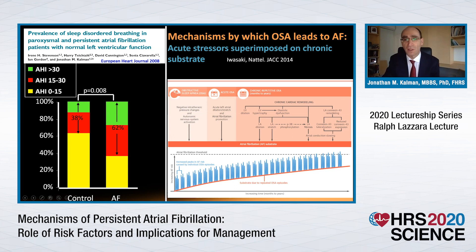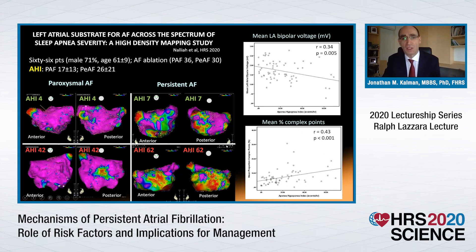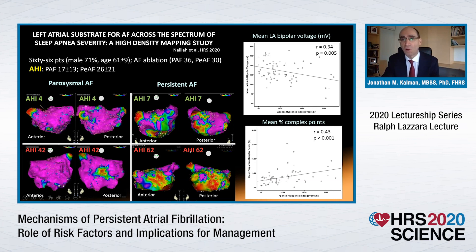There are multiple potential mechanisms by which sleep apnea leads to atrial fibrillation. The underlying progression of substrate — chronic remodelling, LA dilatation and stretch, LV dilatation and hypertrophy — represents one pathway. But each night there is also an acute insult due to marked intrathoracic pressure change, autonomic nervous system activation, and acute atrial stretch, which on any given night might reach the threshold for atrial fibrillation. Studies have shown a continuous relationship: the more severe the sleep-disordered breathing, the more advanced the remodelling — bipolar voltage falls, conduction is impaired, and complex signals increase.